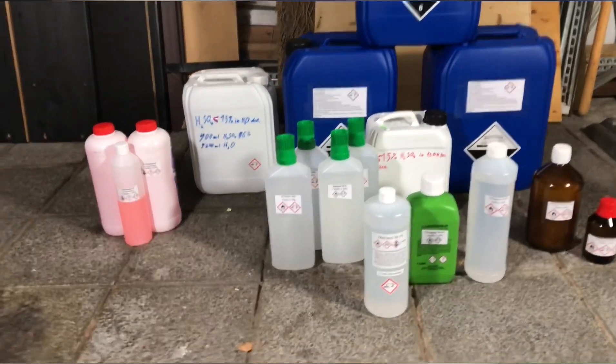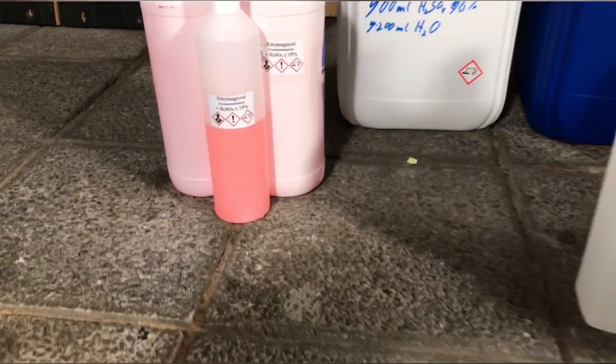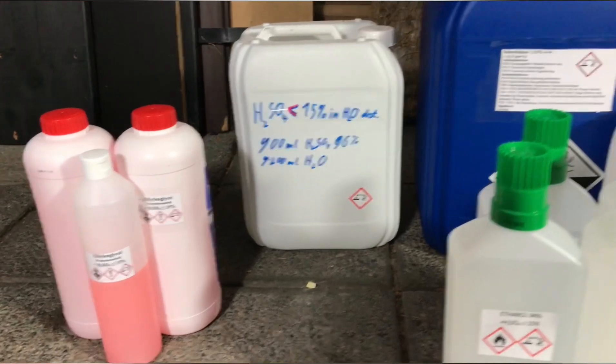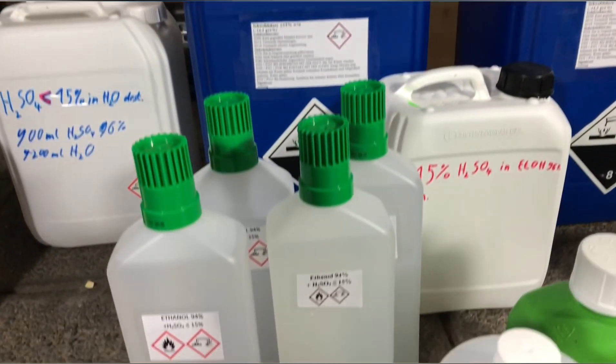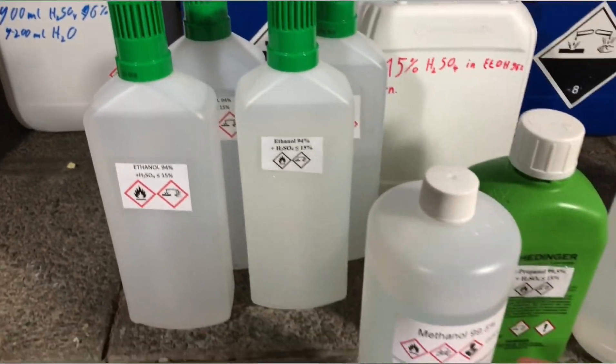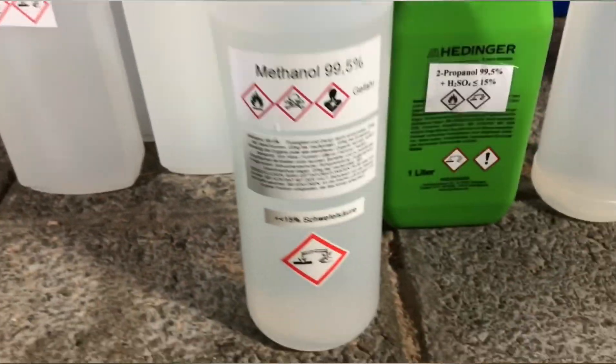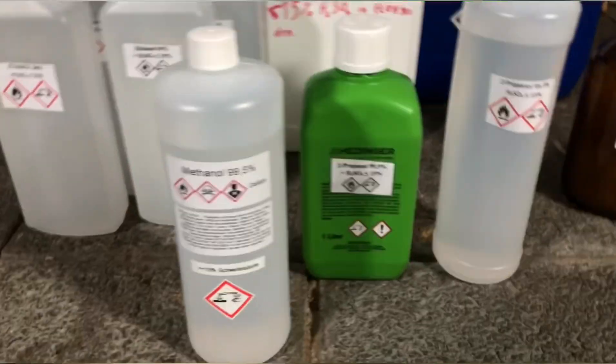And there you go, a lot of sulfuric acid diluted down to below 15% in many different mediums. Here we have sulfuric acid in ethylene glycol or antifreeze, sulfuric acid in water, sulfuric acid in ethanol, sulfuric acid in methanol, and sulfuric acid in isopropanol.